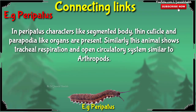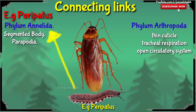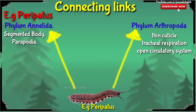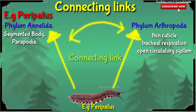There are many characters mentioned in your textbook, and we need to differentiate which is the Annelidan character and which is the Arthropoda character. Thin cuticle is a characteristic of Arthropoda — it is the hard covering present on the cockroach body. Tracheal respiration is also a characteristic of Arthropoda, involving tubes for respiration. The open circulatory system is an Arthropoda character. Together, these characters indicate that Peripatus is the connecting link between the two phyla: Annelida and Arthropoda.